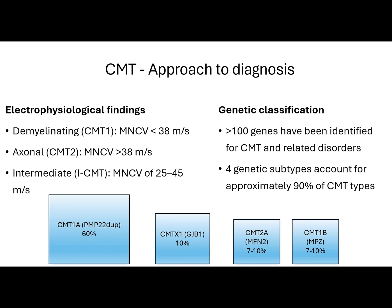I'll show a simplified approach for the diagnosis of CMT. Based on the upper limb motor nerve conduction velocity, CMT can be classified into demyelinating types — CMT1, with reduced velocities usually less than 38 meters per second — axonal type, CMT2, with preserved velocities but reduced amplitudes, and intermediate types with velocities ranging from 25 to 45 meters per second.